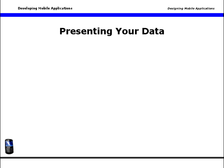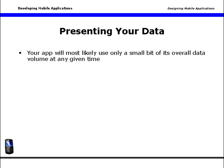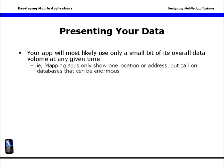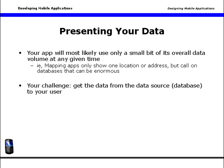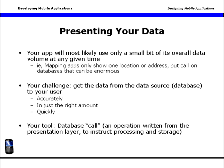Your next task is to move your data out of the database and onto your user's interface. Most likely, you will only use a small bit of your overall available data volume at any given time. For example, mapping applications may only show one location or address, but call on databases that can be enormous. Your challenge, then, is to get the data from the data source, or the database, to your user accurately, in just the right amount, and as quickly as possible. Your tool to do this is known as the database call.